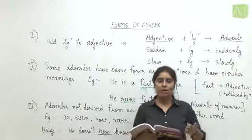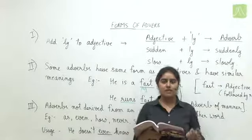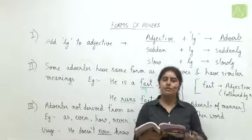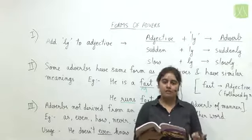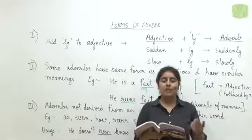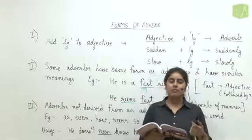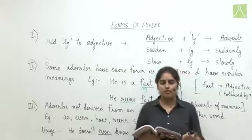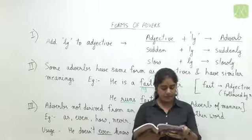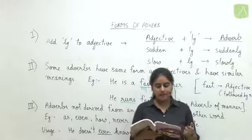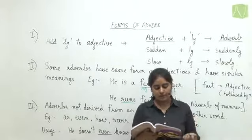When we get the answer to 'when,' it is adverb of time. When we get the answer to 'how,' it is adverb of manner. When we get the answer to 'where,' it is adverb of place. Third question: 'I have pleaded enough and now I give up.'